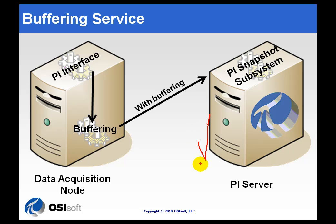Let's say the System Manager needs to bring the server down to do an upgrade. Before buffering was around, PI System Managers would have to come in nights or weekends to do this kind of work because nobody wanted data to be unavailable during the workday when engineers were trying to do analysis. So, it ends up being a very successful way of ensuring you've got redundancy built into the system.